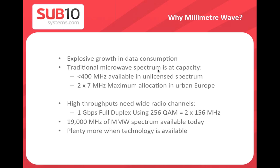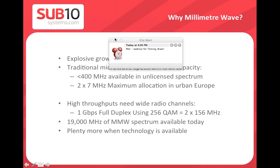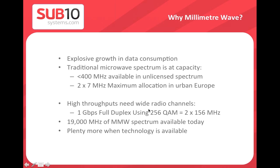For a full gigabit full-duplex link like our V1000 on a traditional 24 GHz system using 256-QAM, you'd need 156 MHz per direction — about 300 MHz total for one link. In contrast, millimeter wave bands at 60, 70, and 80 GHz have 19 gigahertz allocated for point-to-point use. Compared to traditional microwave, it's obvious that millimeter wave is far better suited for high-throughput, high-density networks.